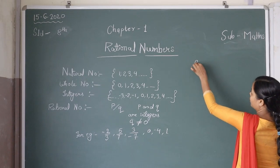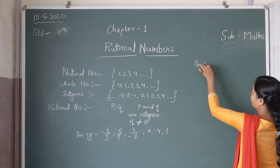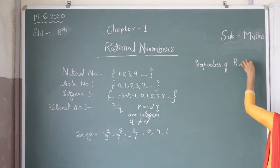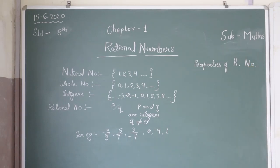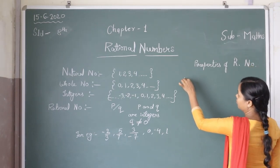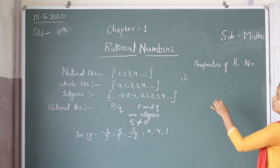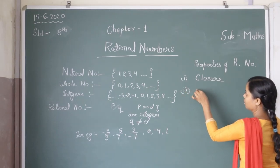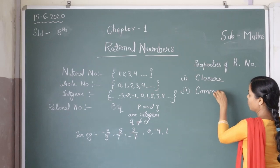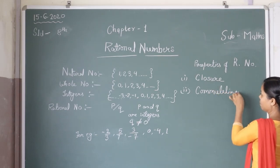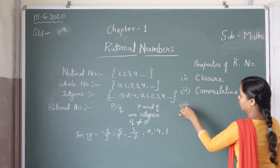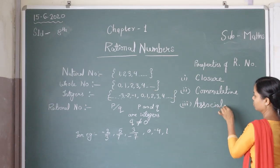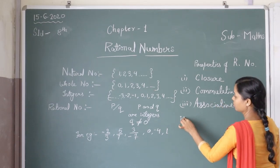We move next and learn the properties of rational numbers. There are basically four properties of rational numbers: the first one is closure, next one is commutative, third one is associative, and the last one is distributive.